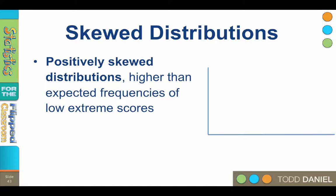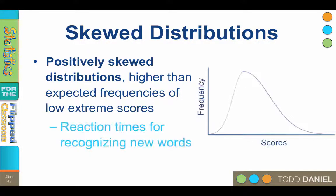In a positive skewed distribution, the higher than expected frequencies are on the low end of the curve. The tail is pulled back on the right, or positive end, of the number line. If we were measuring reaction time, we would expect to have a large number of very quick responses and only a few slower responses, taking more time further up the positive end of that scale.